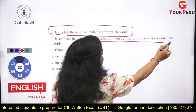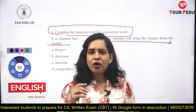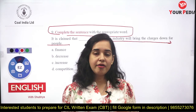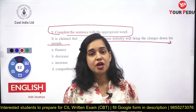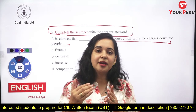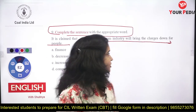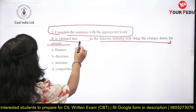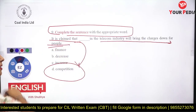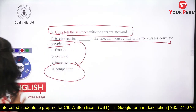Question nine asks you to complete the sentence: 'It is claimed that dash in the telecom industry will bring the charges down for people.' When there is increasing competition, every brand wants to reduce rates to stay in the market. The answer is competition — the more competition, the more charges come down. This was seen when Jio entered the market and other companies had to lower their rates.